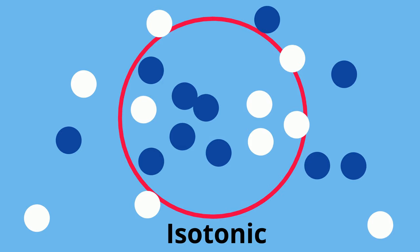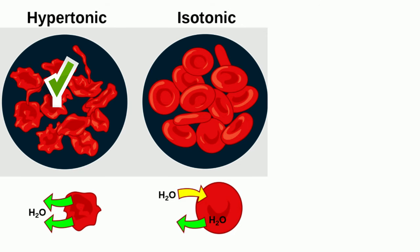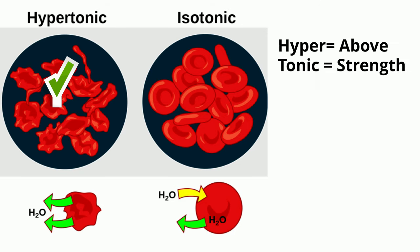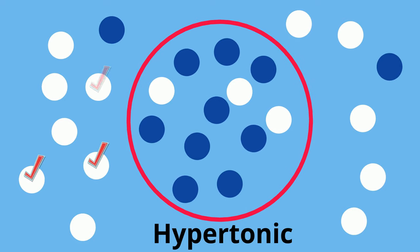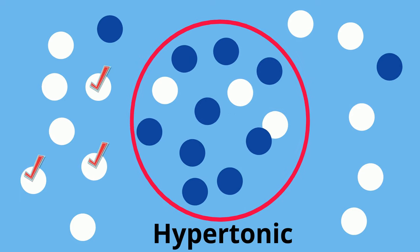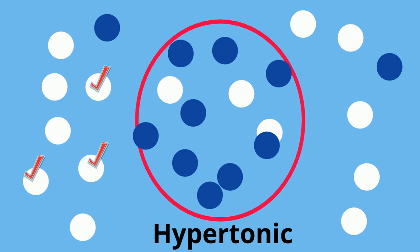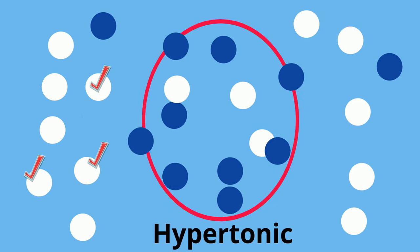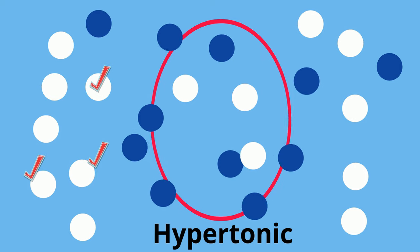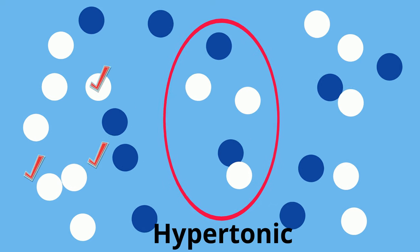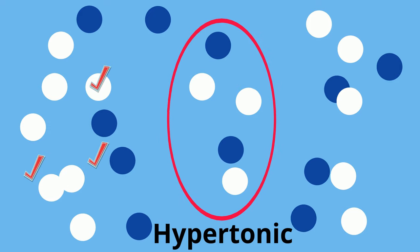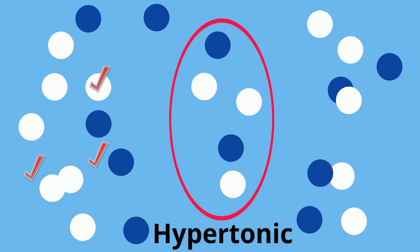Now a hypertonic solution is different. Hyper meaning above, and tonic meaning strength. Notice that there are more salt or solute than solvent outside the cell. As a result, you have a higher concentration of solvent inside the cell, so the solvent travels out of the cell and the cell will shrink. The solvent always travels from high concentration to low.